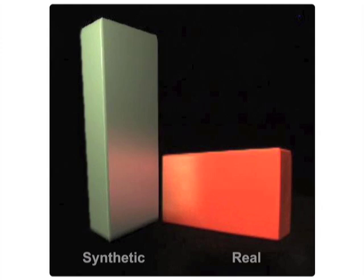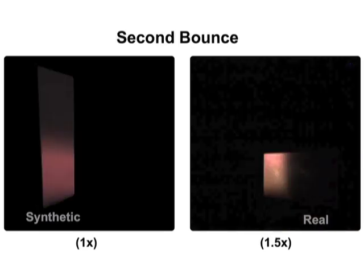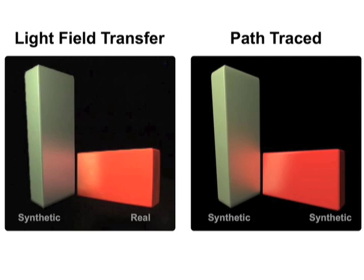Here we decompose a scene with a synthetic green block and a real red block into direct, second, and third bounce contributions from both objects, and show that the sum of all contributions provides similar results to a purely synthetic scene rendered with path tracing.